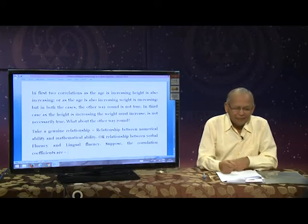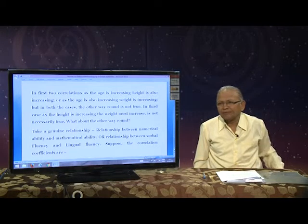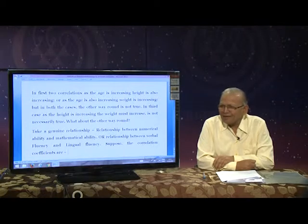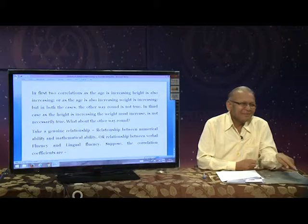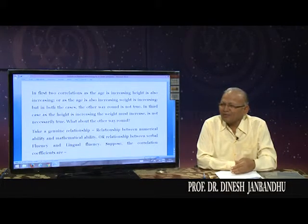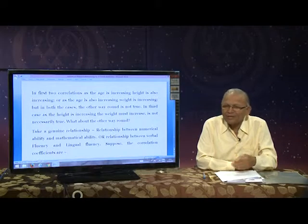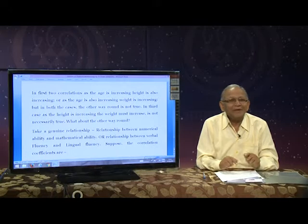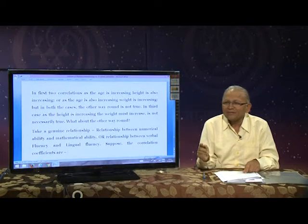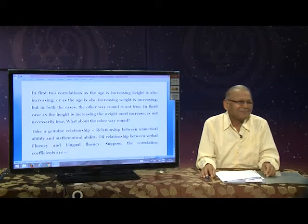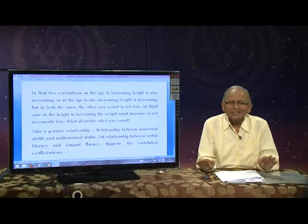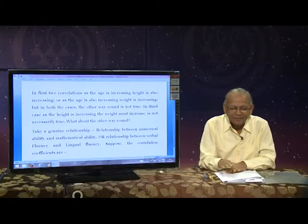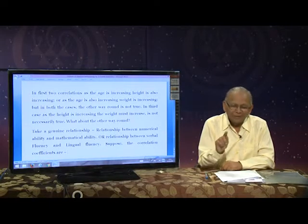For example, consider ice cream purchases and the number of people who died — there is a correlation. Many times, when you people are doing research, your correlations are spurious correlations. Even height and weight — even though there is a relationship — hence, the relationship should be genuine.